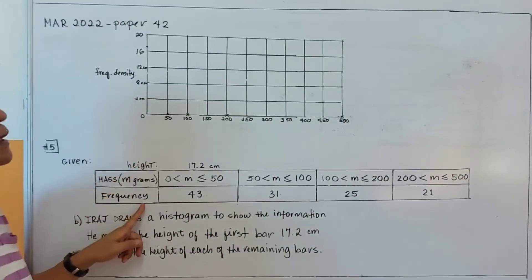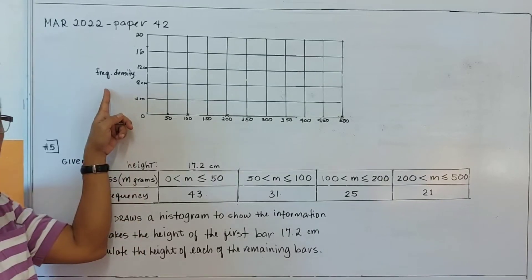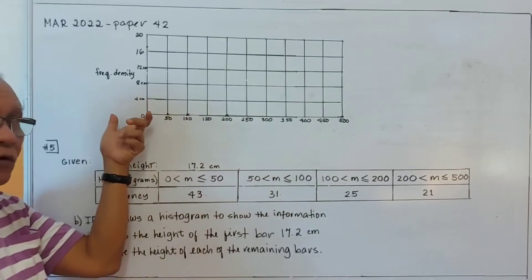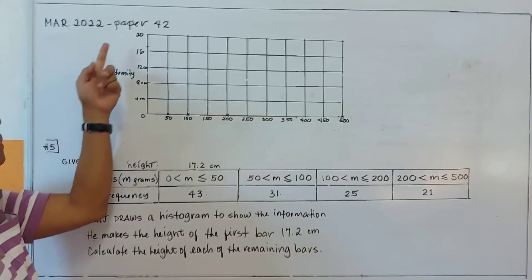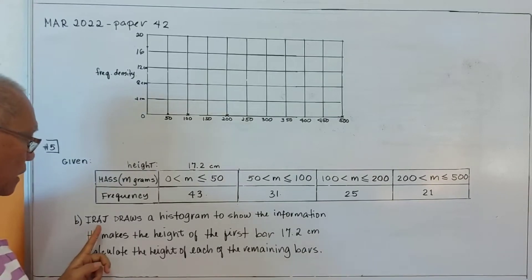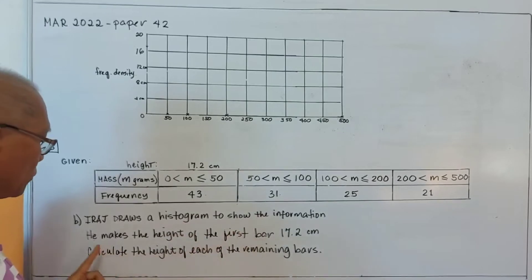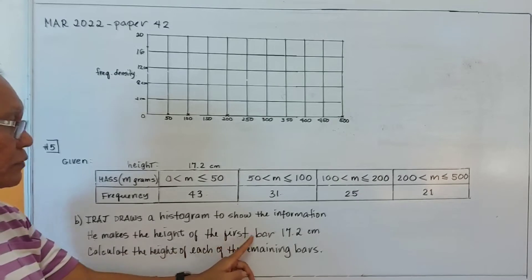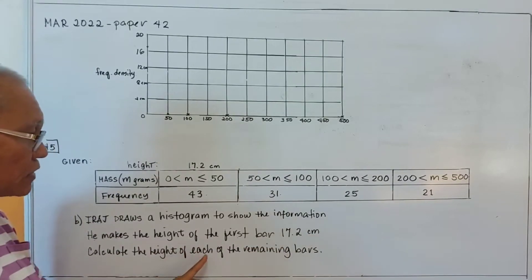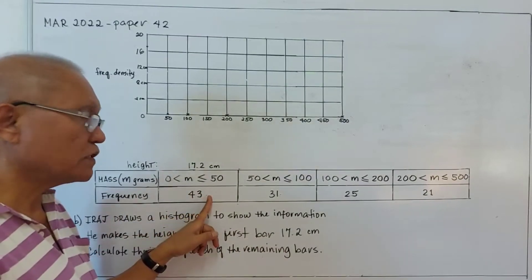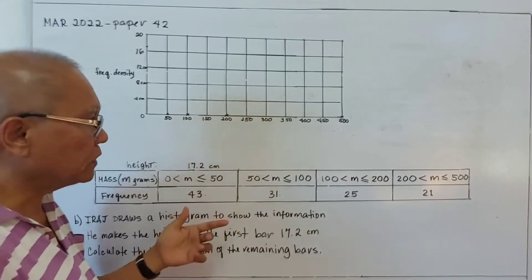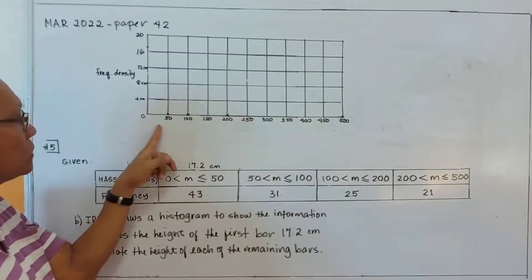Let us continue our lesson about histogram or frequency density. It is called histogram if we have equal intervals; if we have unequal intervals we usually call this frequency density. This is paper 42, March 2022, number 5b. The problem is: Iraj draws a histogram to show the information. He makes the height of the first bar 17.2 centimeters. We need to calculate the height of each of the remaining bars — not to actually plot them, but to understand how to find the height.